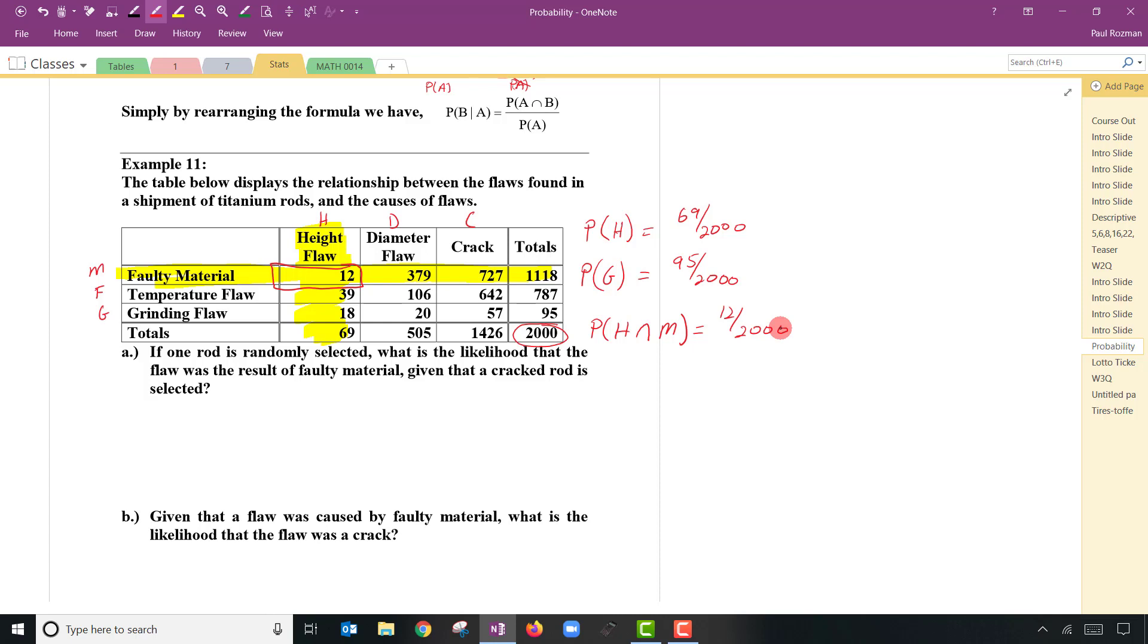There's one major problem with this whole example in that height flaw and diameter flaw are independent of one another. Like there's no category where you could have height flaws and diameter flaws at the same time. Our titanium rods would only have, it's either too long or too short or it has a diameter issue or it has a crack, but it never has multiple issues. So it's not the most realistic example in that sense, but it does give us an introduction to this.